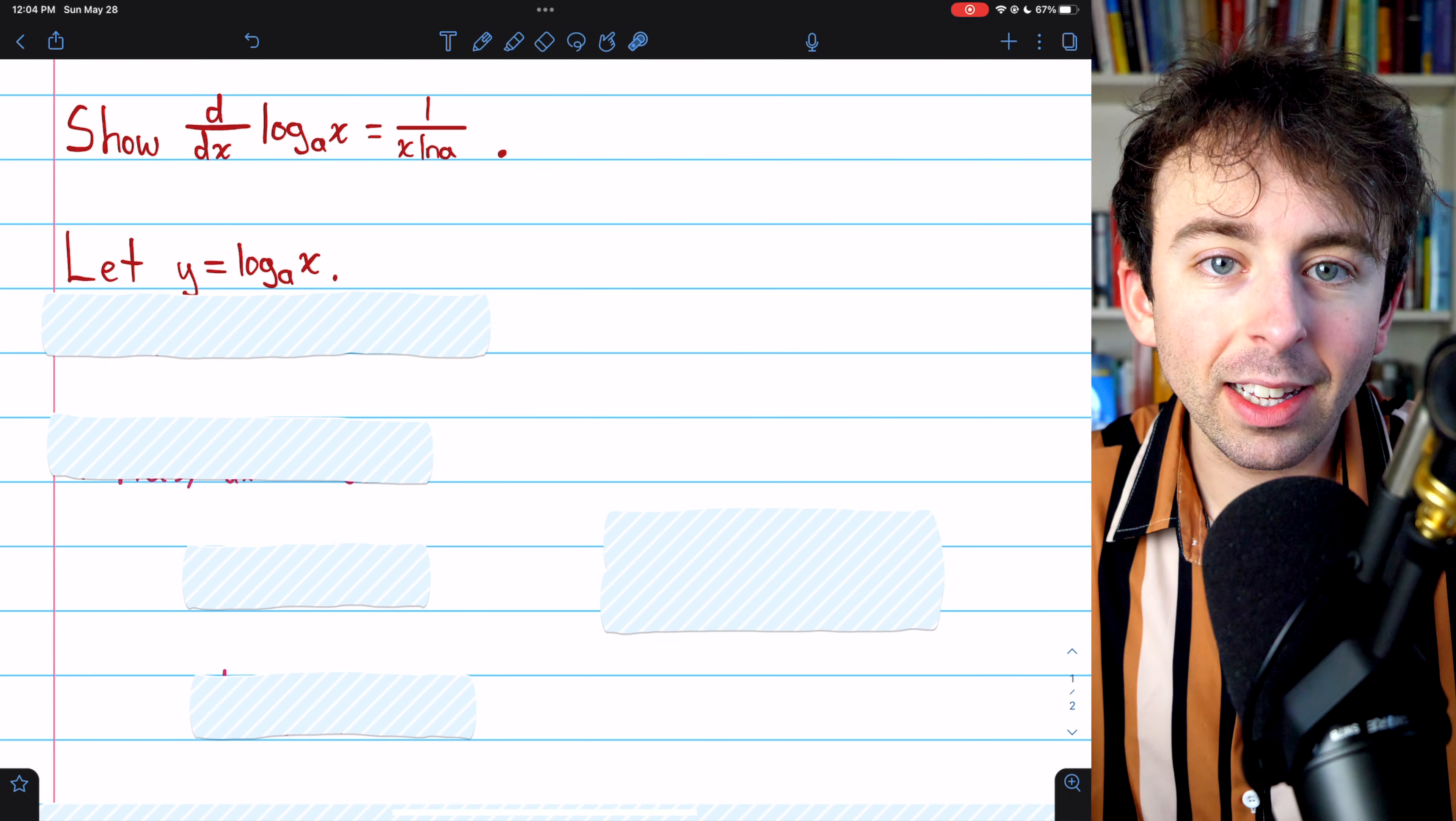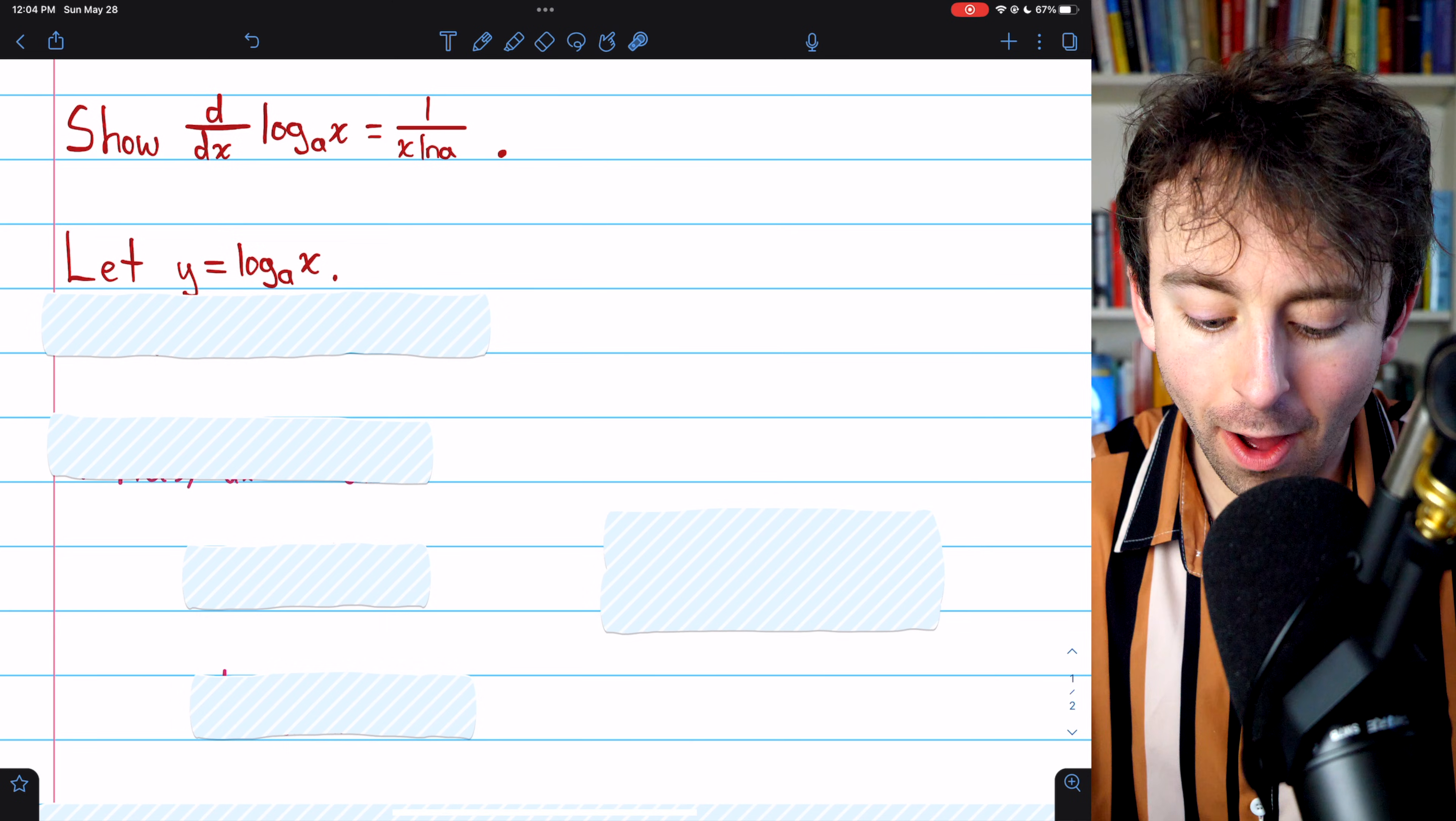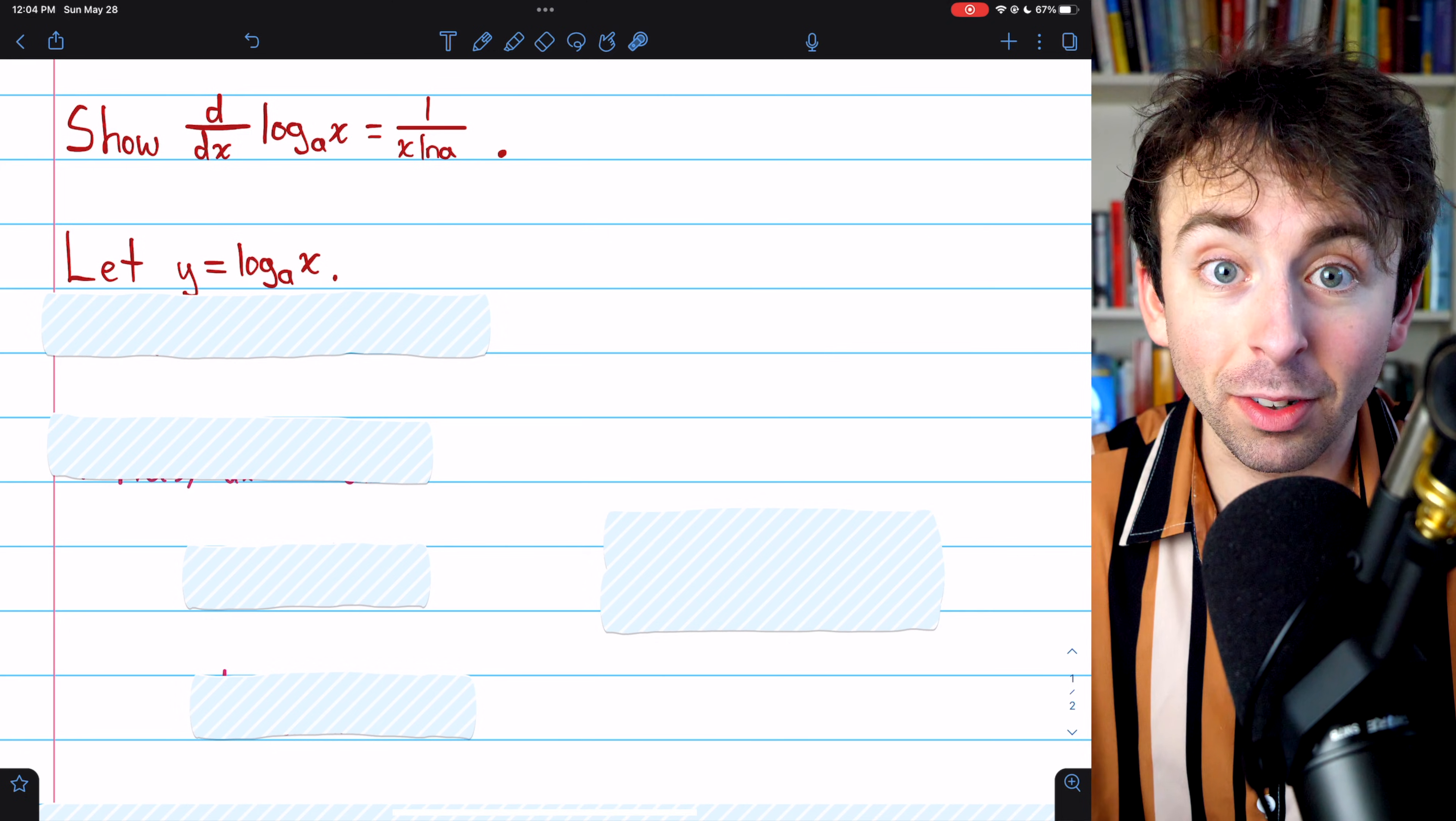We'll put both sides of the equation in a power of a. We're choosing a because the log is base a, so if we put this in a power of a, they'll just cancel out.